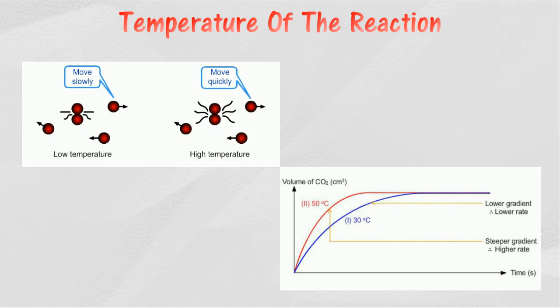When the temperature of a reaction increases, the particles obtain more kinetic energy, therefore the rate of reaction will be higher. The graph shows the effect of temperature on the rate of reaction for the reaction between calcium carbonate and hydrochloric acid. A higher temperature of the reactants gives a higher rate of reaction.